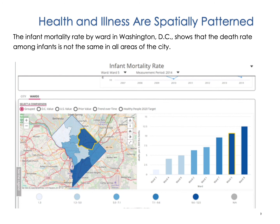An example we spoke about earlier was concentrated poverty — if you take poor people and put them in a neighborhood with many other poor people, they will be less likely to transcend the conditions of poverty than if you put them in a different kind of neighborhood. Putting lots of poor people together concentrates, in some ways, the negative effects of poverty. But it's not just the kinds of people that are in spaces — it's also the dynamics of the spaces themselves.